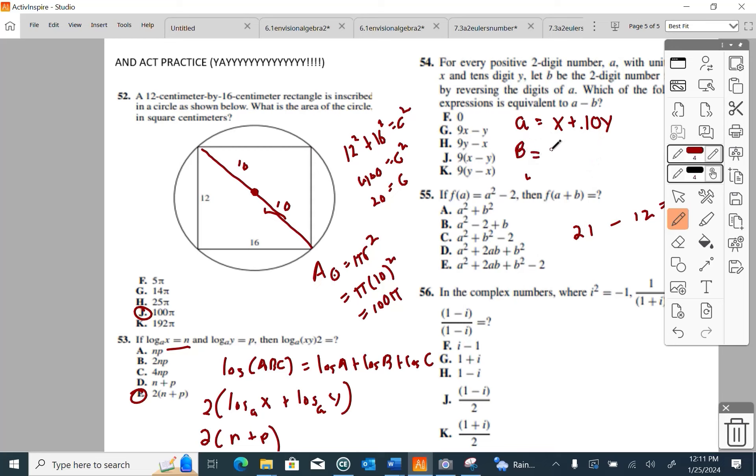B happens to be reversed, it becomes 10X plus Y, because we reverse the positions, or reversing digits of A. So now it still makes sense, 10X plus Y. Because now it would make 12. That's my setup on this one. This is the one that works out.